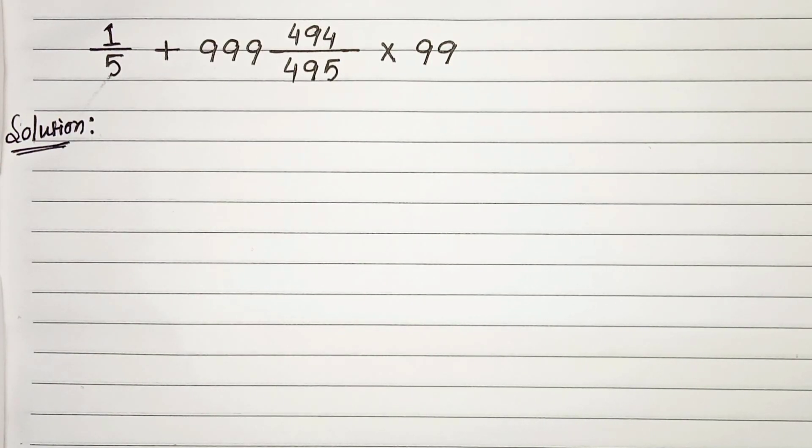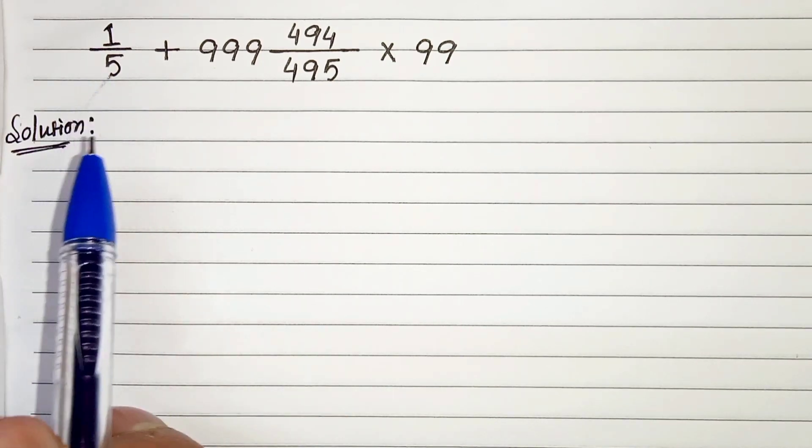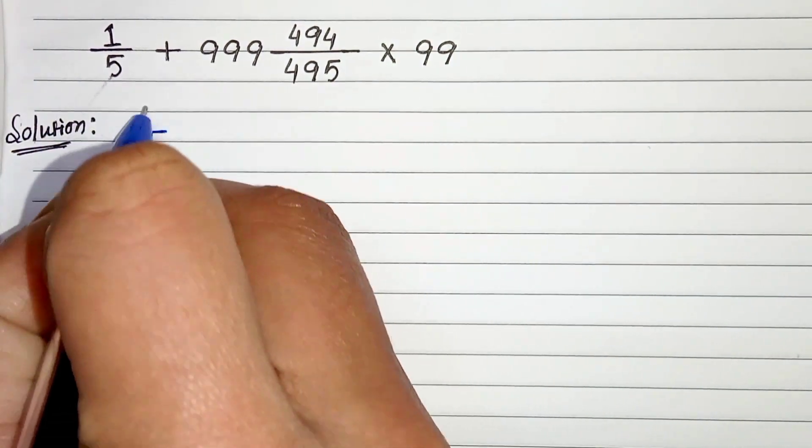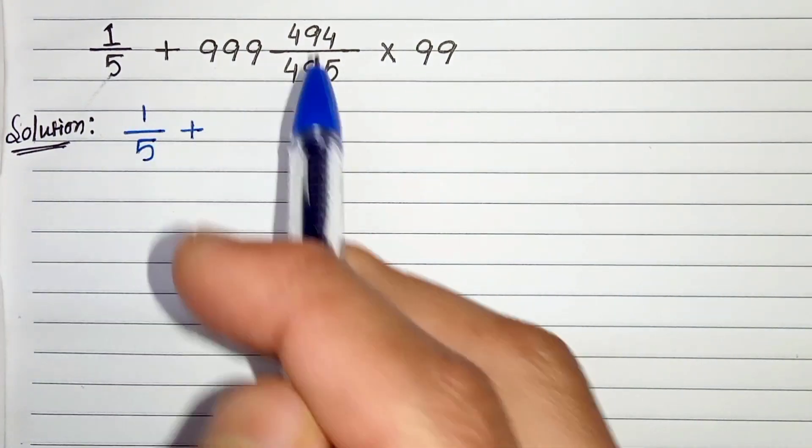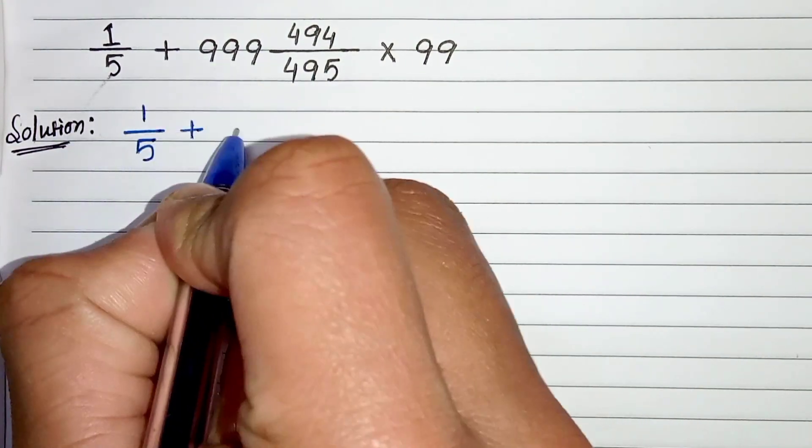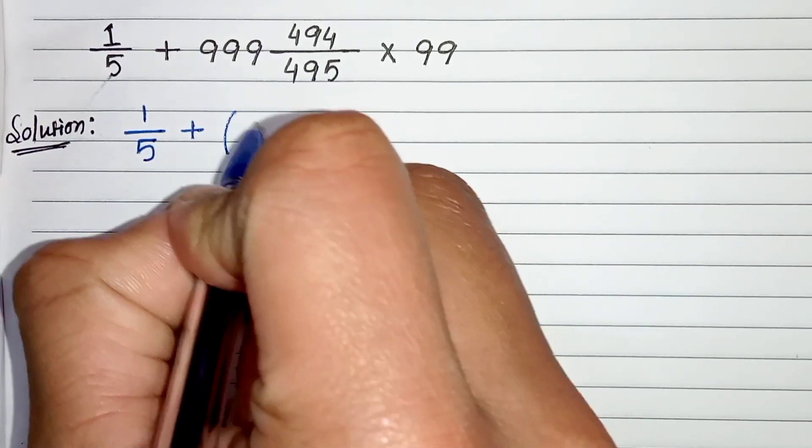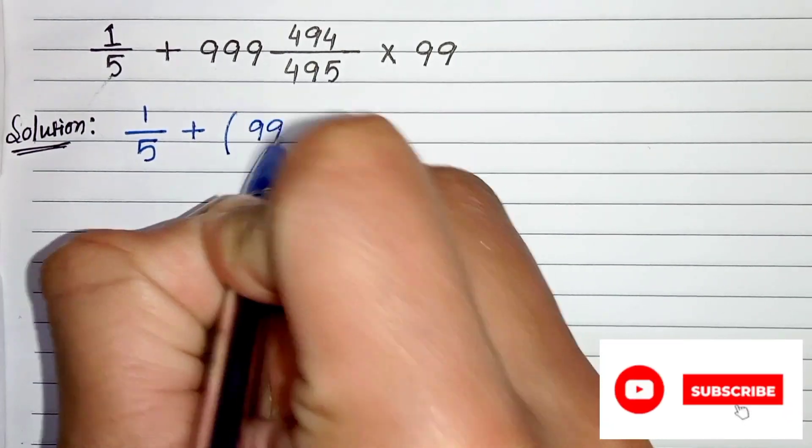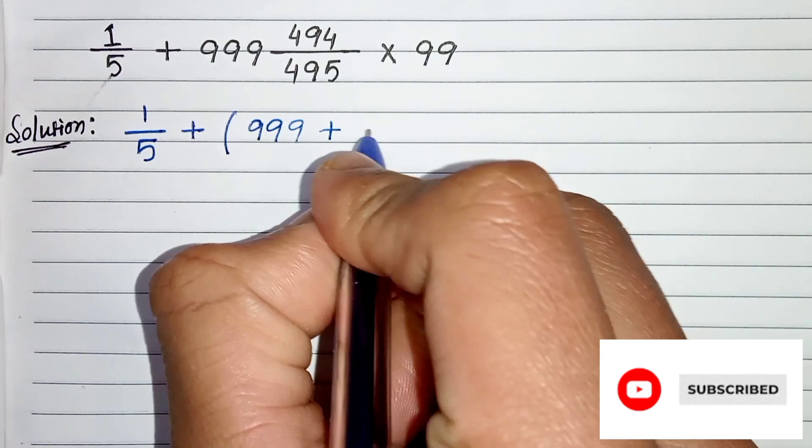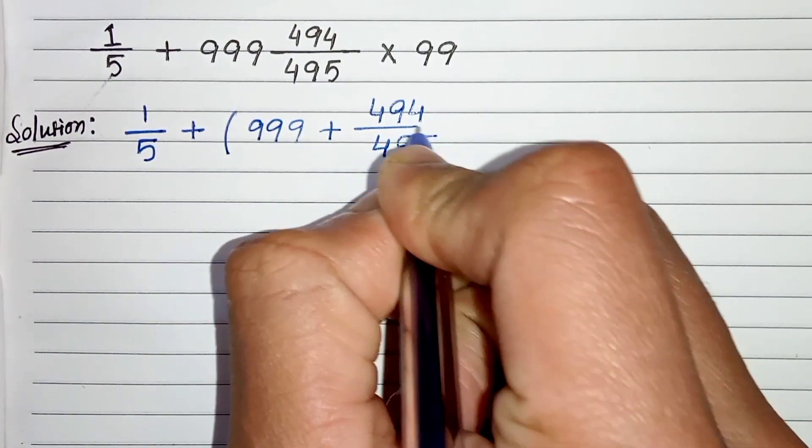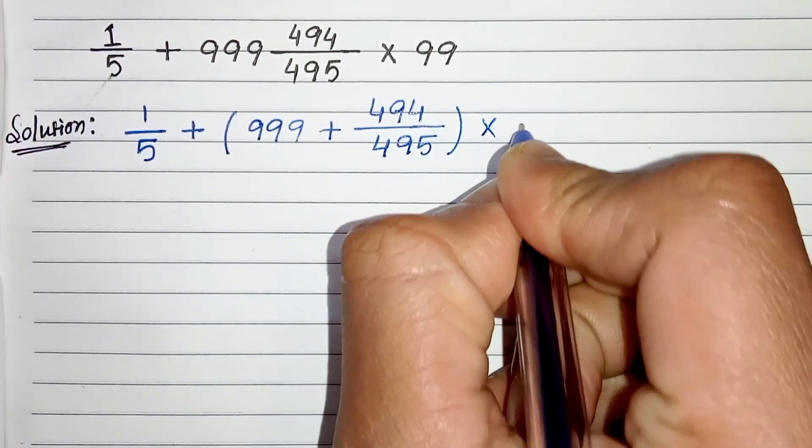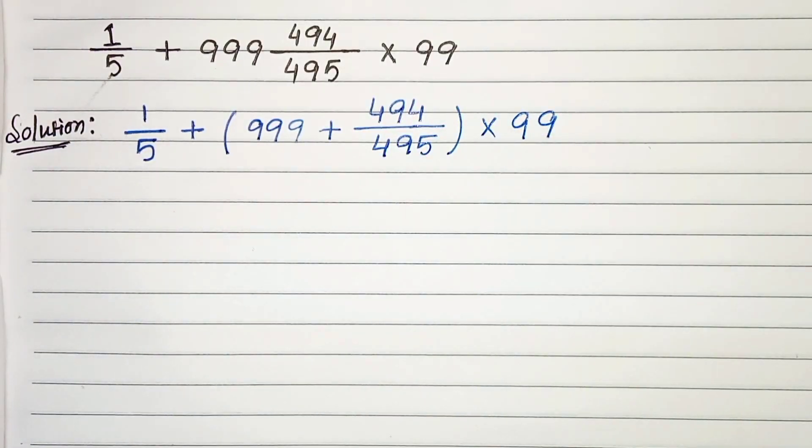First of all, let's leave 1/5 as it is, plus let's write the mixed fraction as the sum. So we can write this mixed fraction as 999 plus 494/495 times 99.